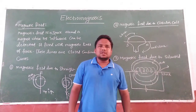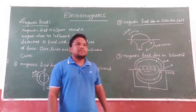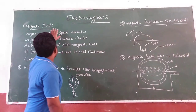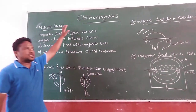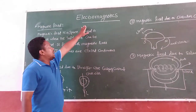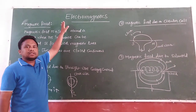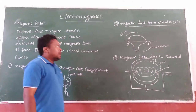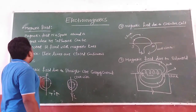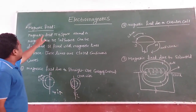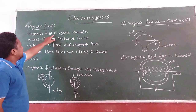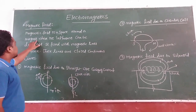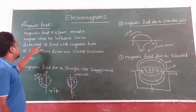Welcome back to our YouTube channel. This is Pramit Kumar. Today I am going to discuss about the magnetic field in the chapter electromagnetics. What is the magnetic field? What is the definition for magnetic field? Magnetic field is a space around a magnet where its influence can be detected.